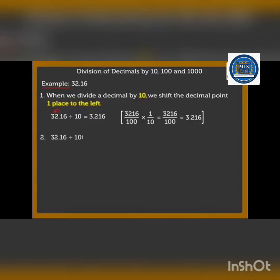When we divide the same number by hundred, then we will shift two places to the left. So you can see here now we have the answer 0.3216.